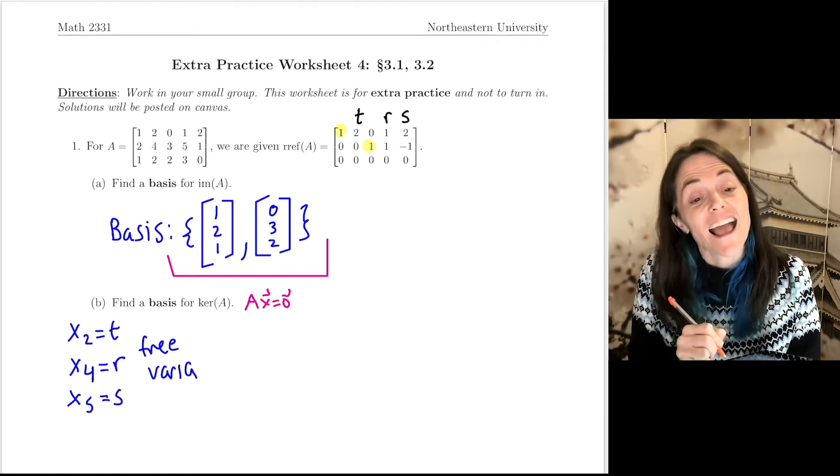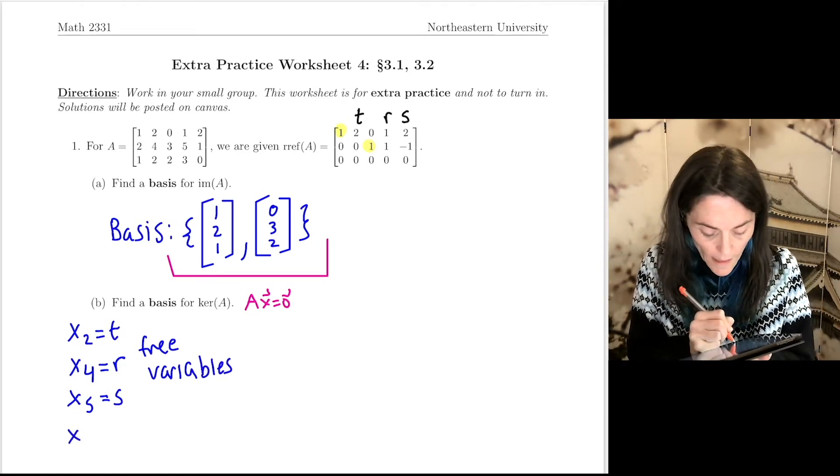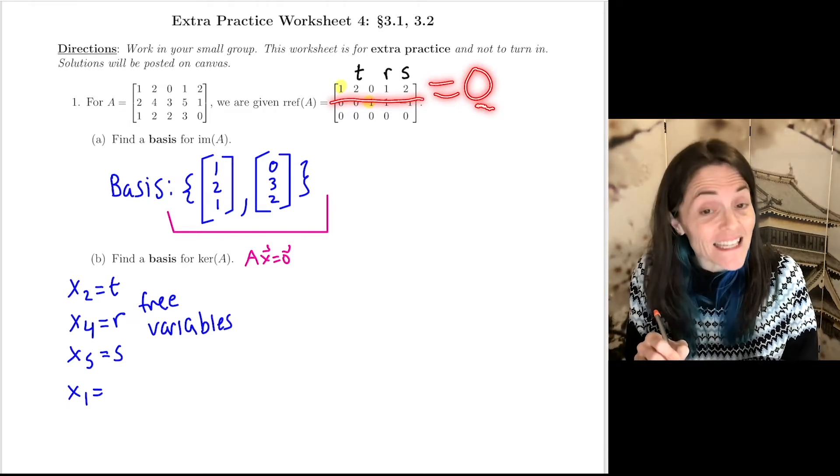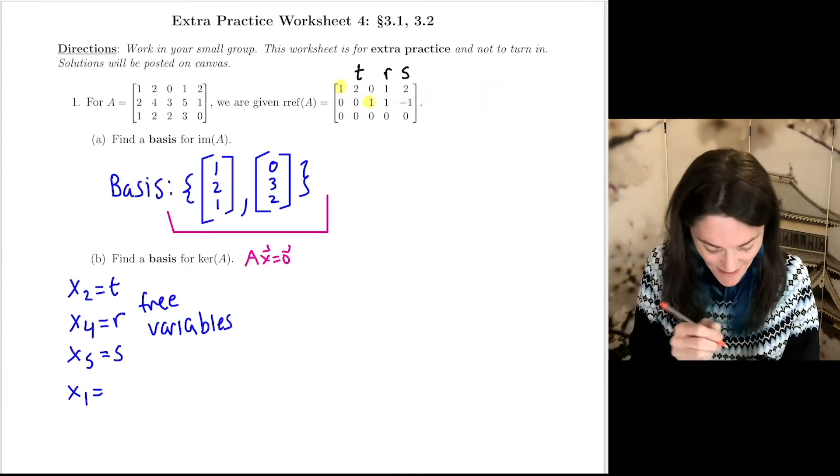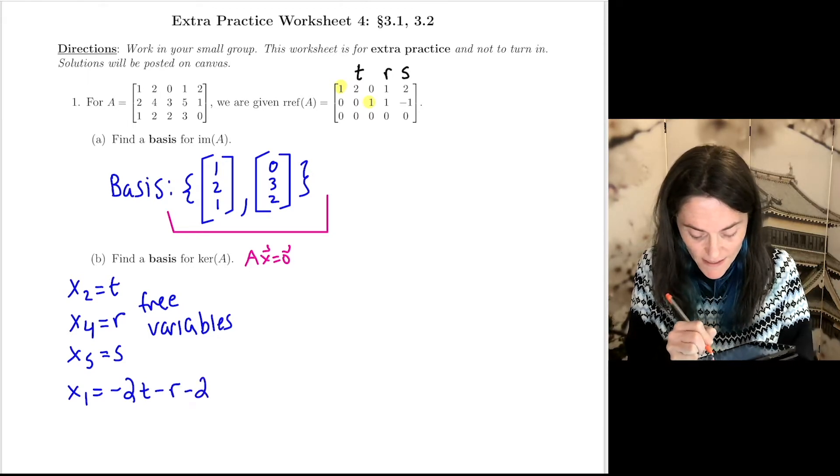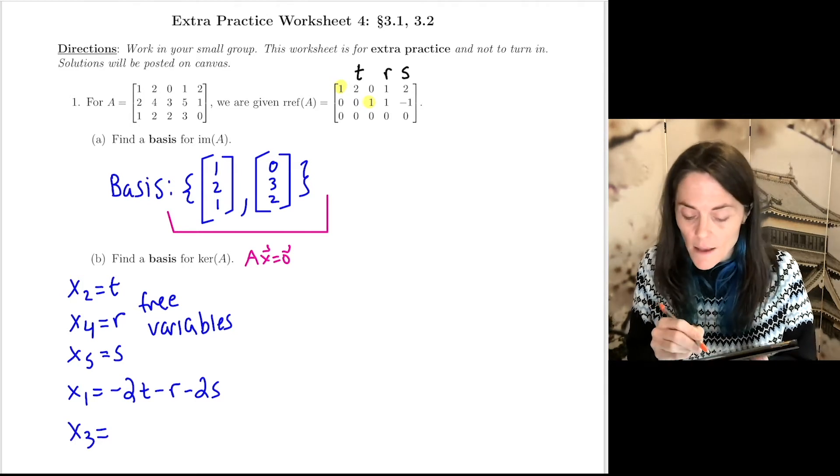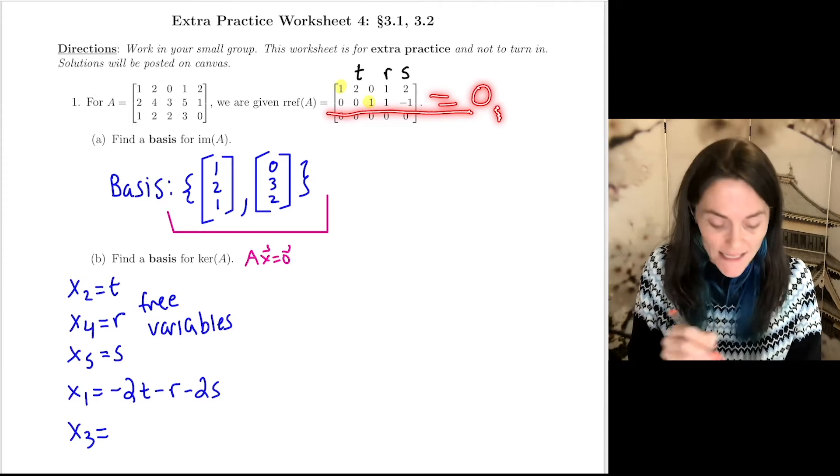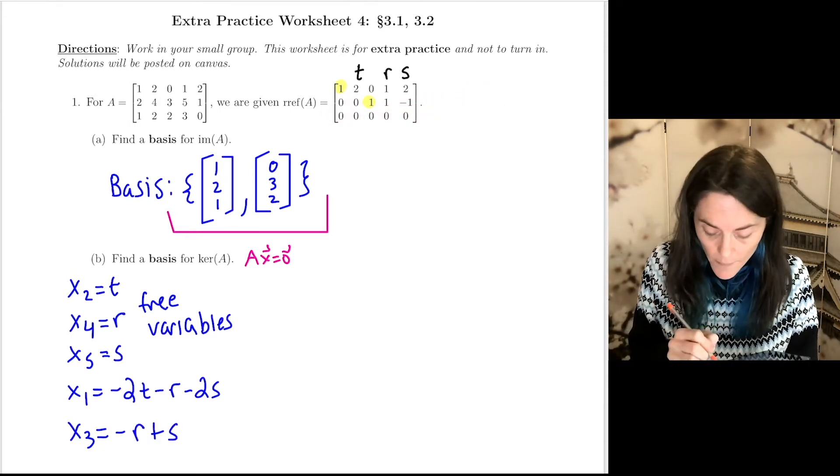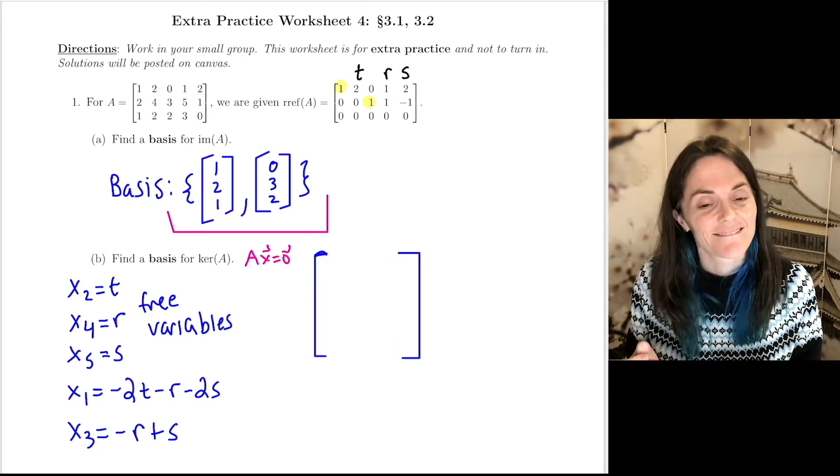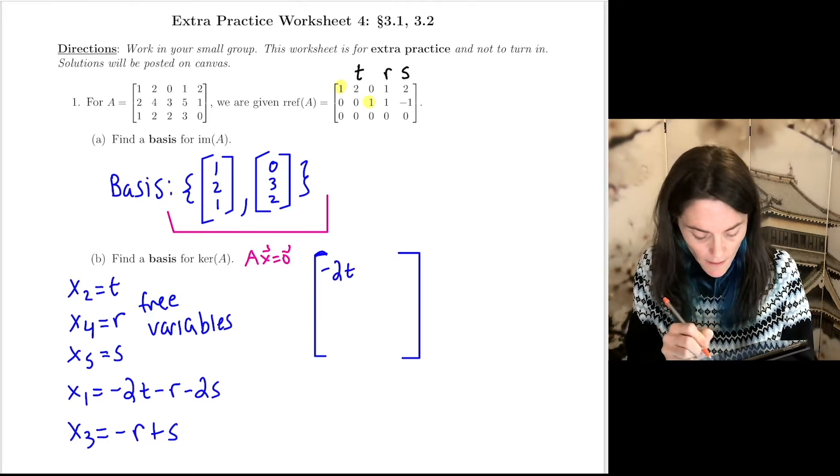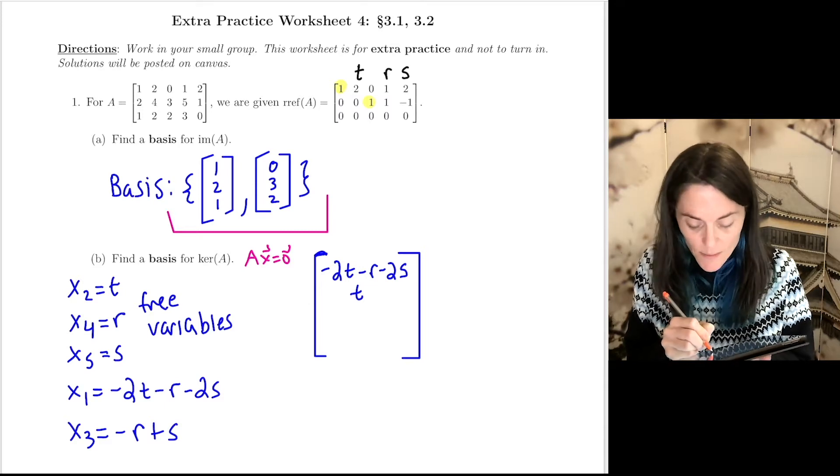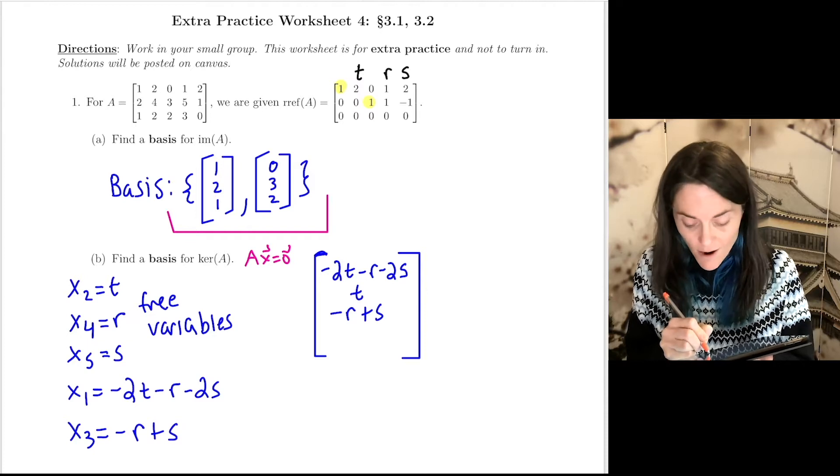X1, we use this first line, and we have to remember there's an equal zero over here. X1 will be minus 2T minus R minus 2S. Now we solve for X3. We use this second line, and once again, we have to remember there's an equal zero over here. So I have X3 is minus R plus S.